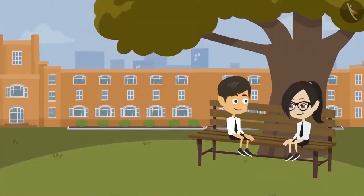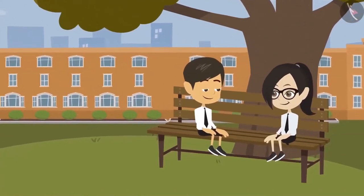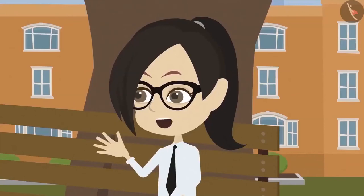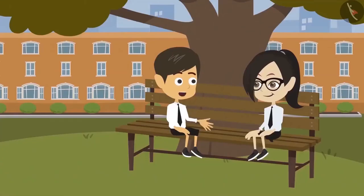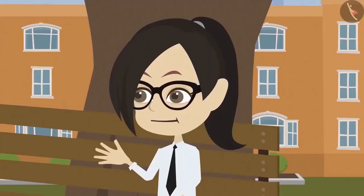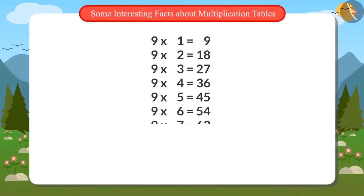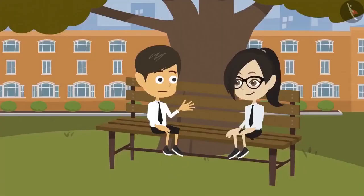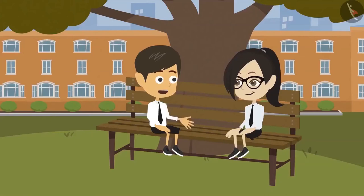Rayansh and Vandana are in the school park discussing about multiplication tables. Yesterday I learned about a few interesting facts about tables on the internet. Interesting facts? Tell me too, Rayansh. Okay, at first I will tell you interesting facts about multiplication table of 9. This is the table of 9. The next number in the series is 18. If we add both the digits of the number 1 and 8, the answer is 9. Similarly, if we add the digits of any other number from the multiplication table of 9, the answer will be 9.